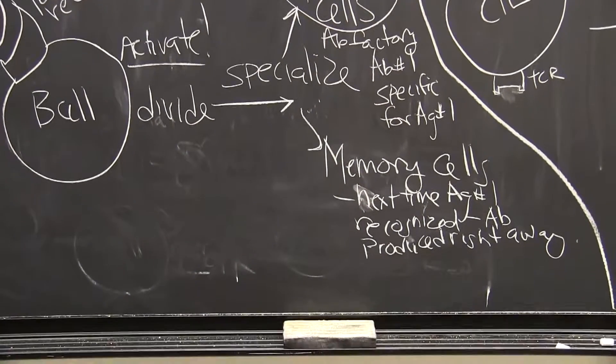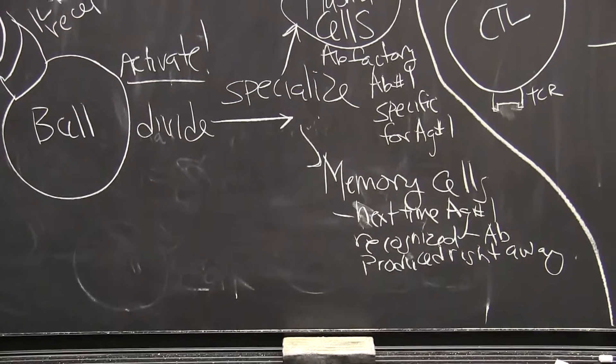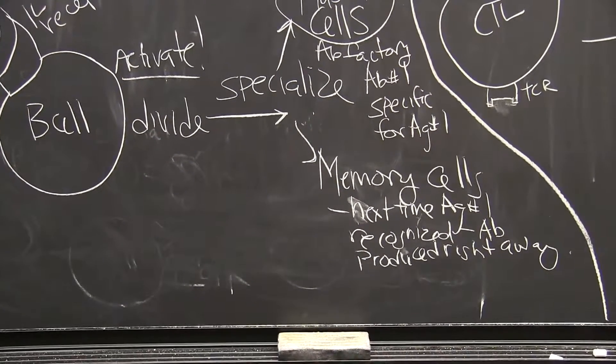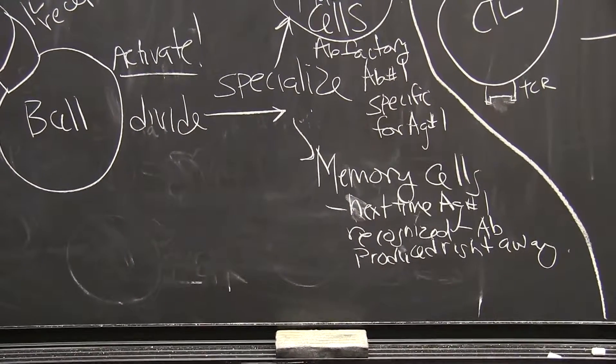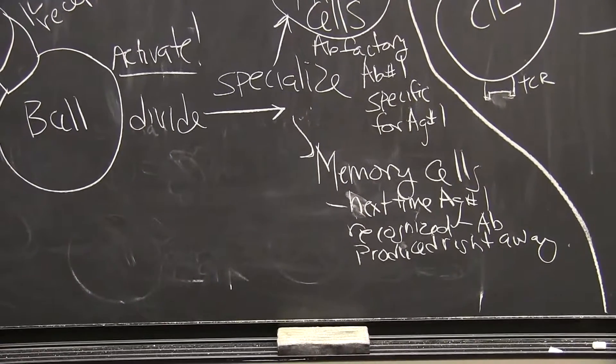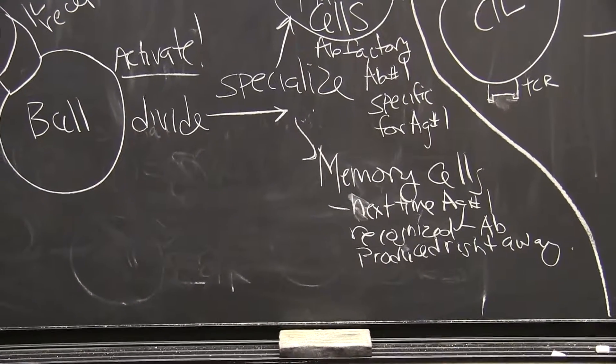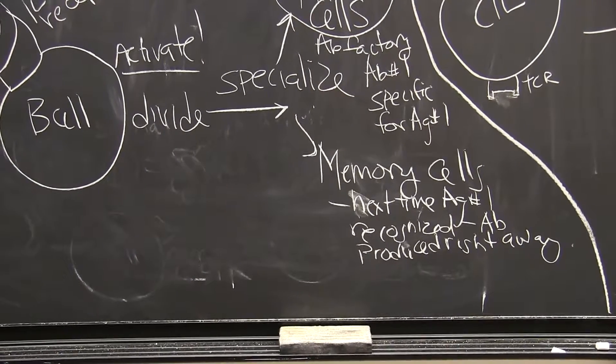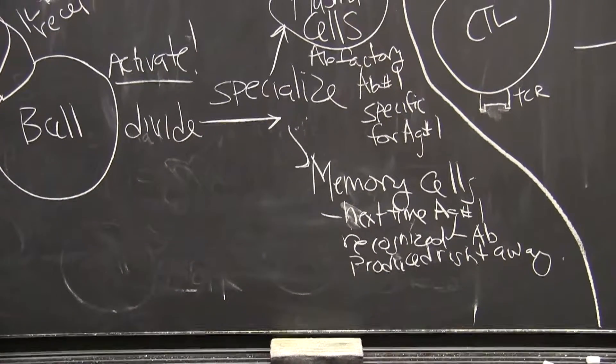The other thing that happens is the specialization into memory cells, memory B cells. These are great because the next time the body sees antigen number one, this will be recognized and antibodies will be produced right away.